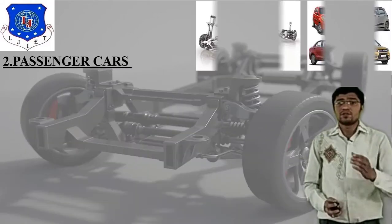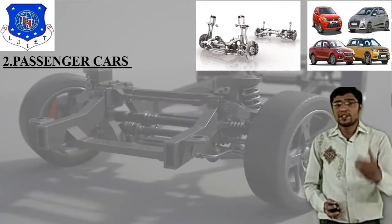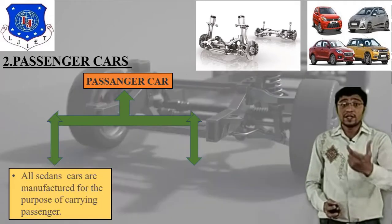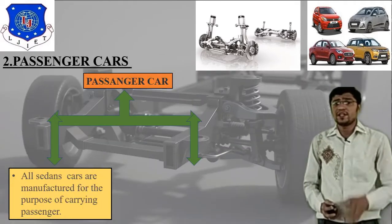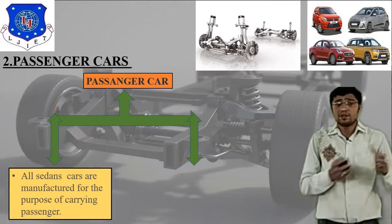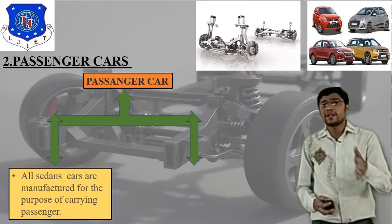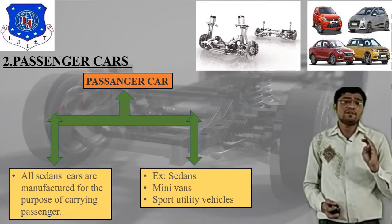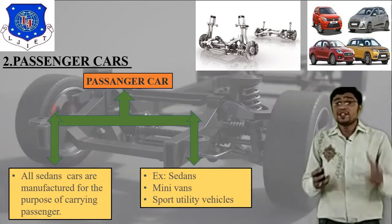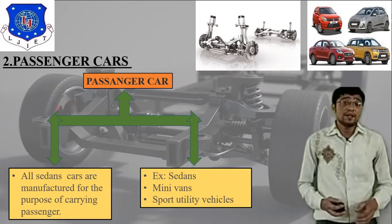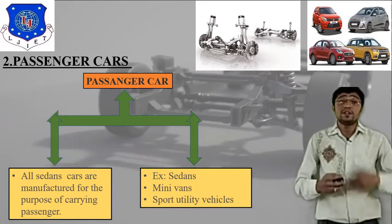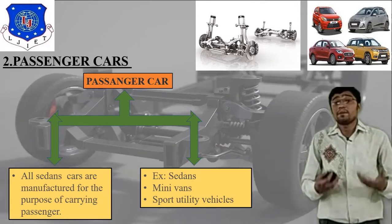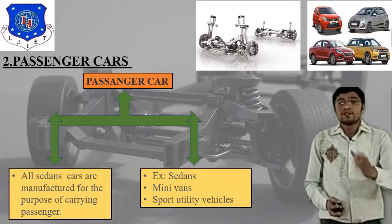The second type is passenger car. Here I have attached two images — on the left side is the axle of the passenger car and on the right side are different passenger car models. All sedan cars are manufactured for the purpose of carrying passengers, either long distance or short distance. Applications include sedan car, minivan, and sport utility vehicle.